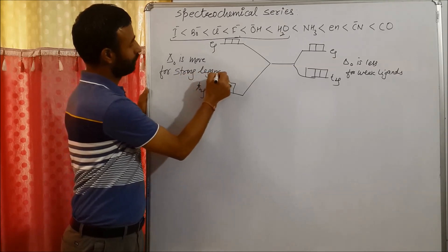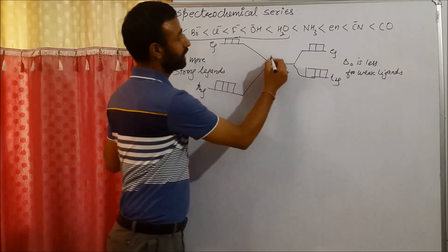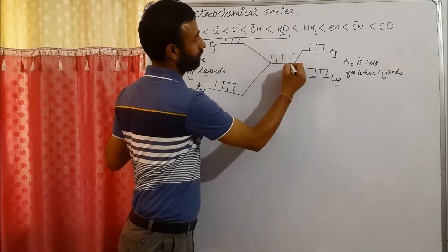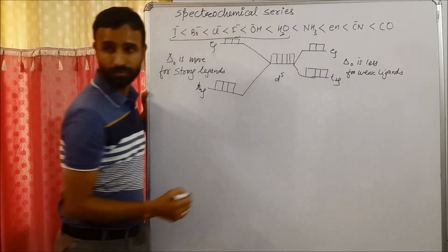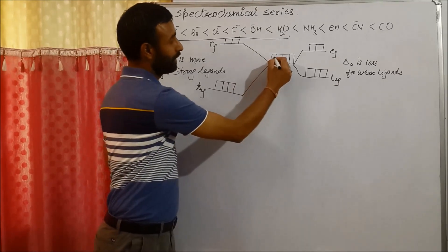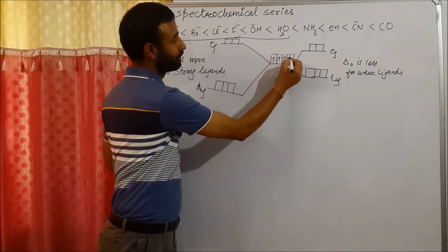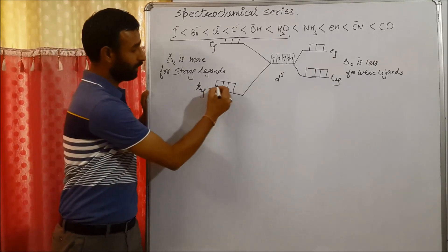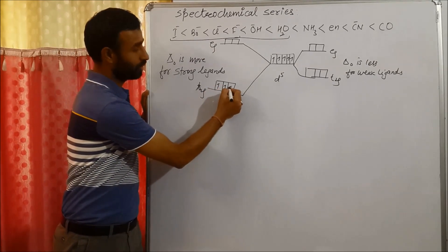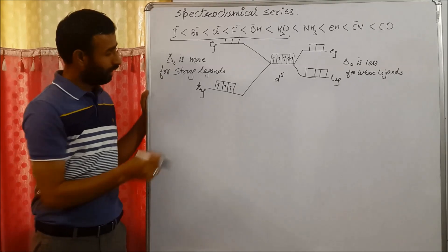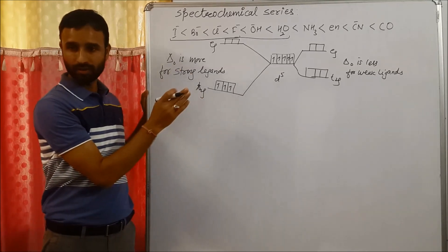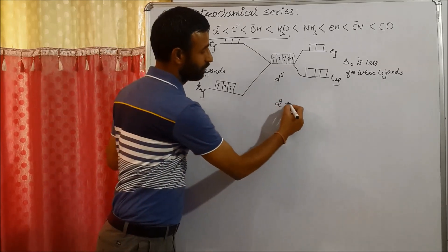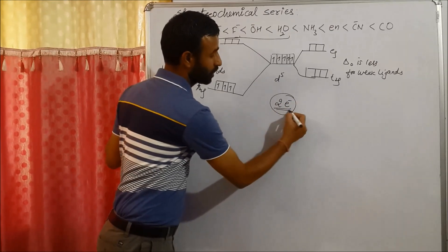Now, let us take an example. We have D5 configuration. So when we have D5 configuration, out of 5, 3 electrons are in T2G. Now, how many electrons left? Two. So two electrons has two options.